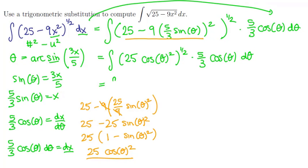Now since we have a product to a power we can do this individually. This is 25 to the 1 half times cosine squared to the 1 half which is just cosine to the first times 5 thirds the cosine of theta d theta.